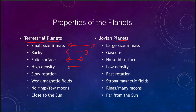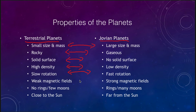All of the terrestrial planets are high density, while all of the Jovian planets are lower density. All of the terrestrial planets have a slow rotation, while all of the Jovian planets have a faster rotation — so even the fastest rotating terrestrial planet, Earth, rotates slower than the slowest rotating Jovian planet. The terrestrial planets have weak or no magnetic fields, while all the Jovian planets have strong magnetic fields.